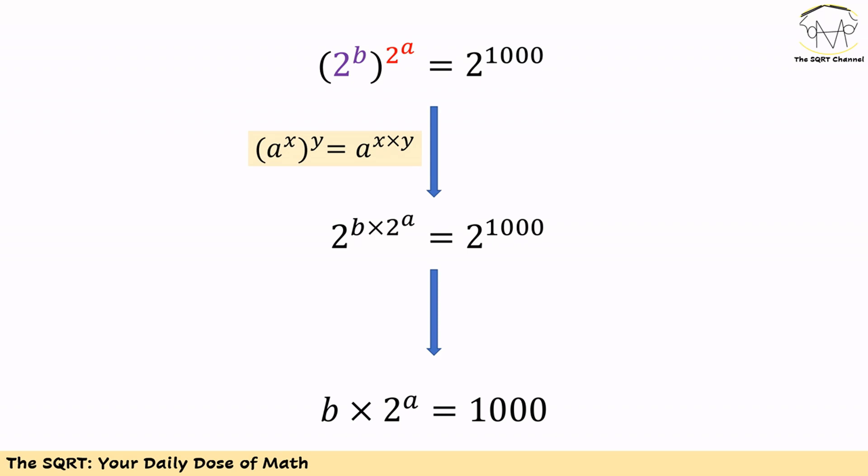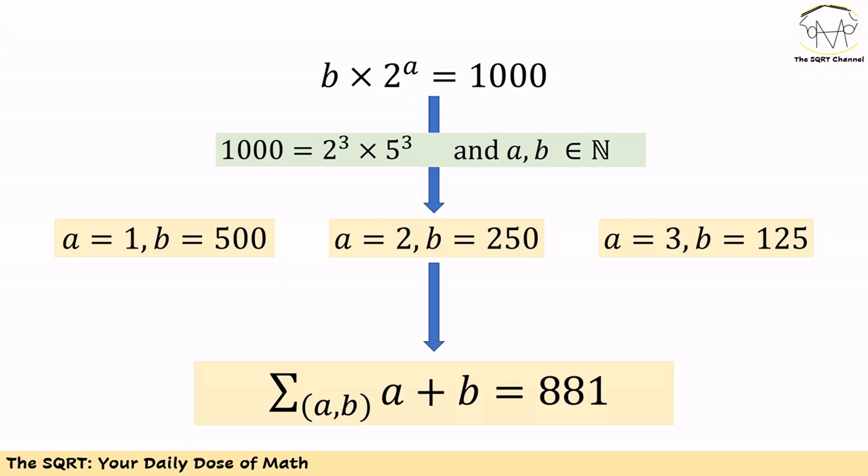So we have b times 2^a equals 1000. Now we have a very simple equation to solve. Remember 1000 can be written as 8 times 125, where 8 equals 2^3 and 125 equals 5^3. We want to find all possible positive integers a and b.